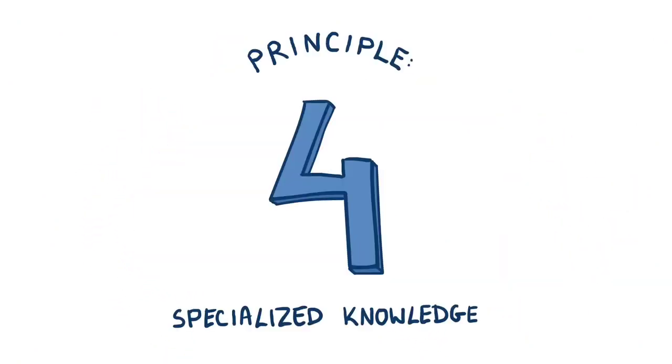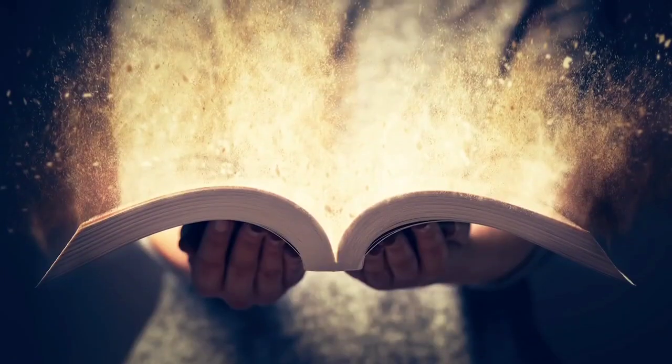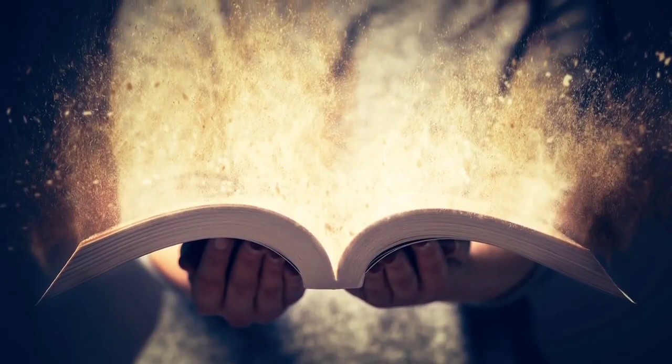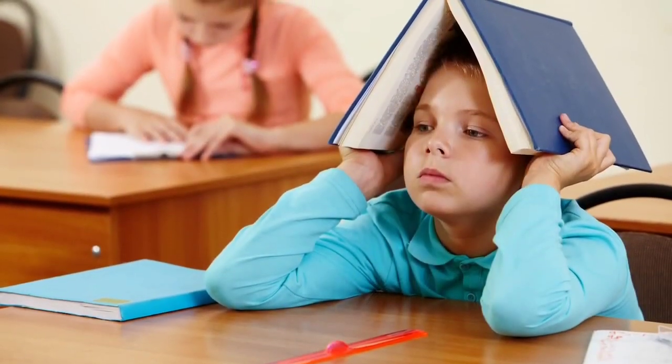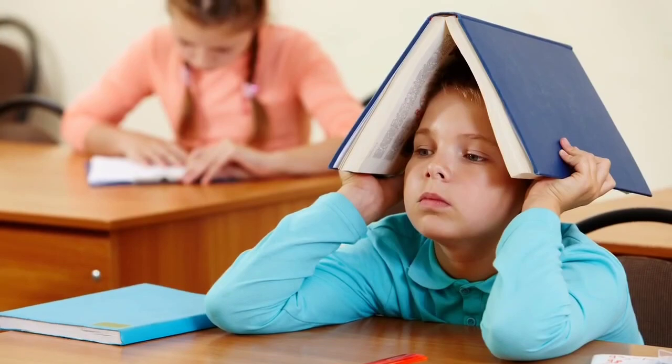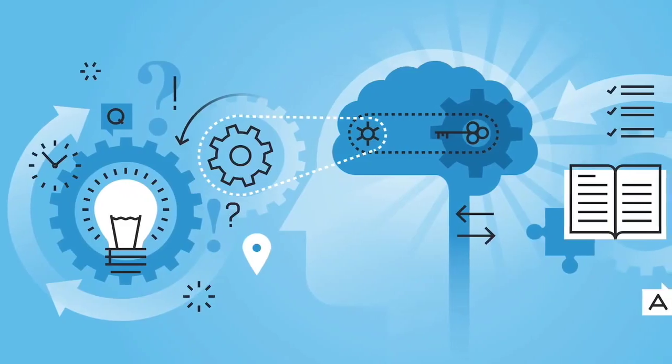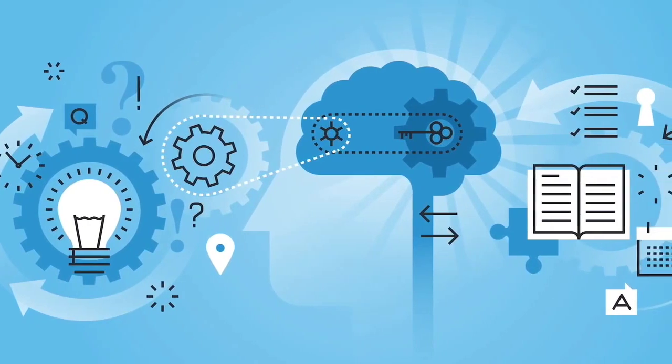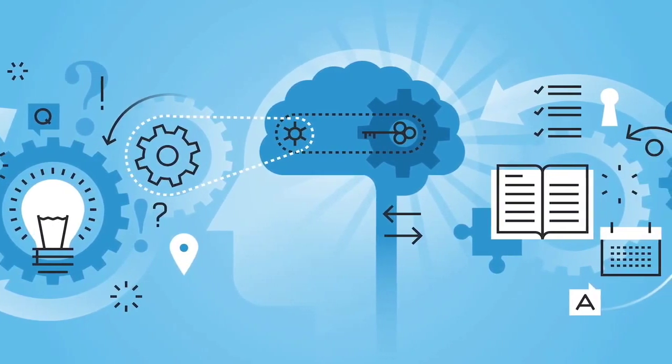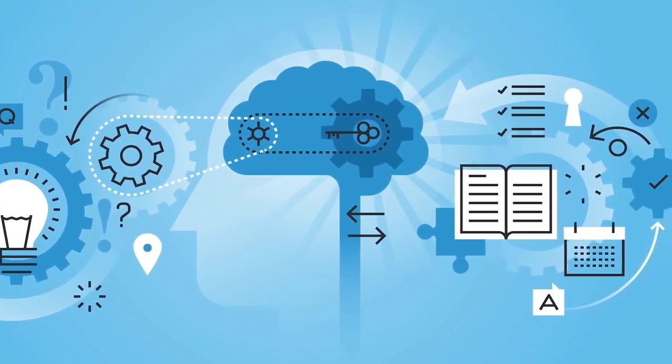Principle four is specialized knowledge. There are two kinds of knowledge: general and specialized. General knowledge is the kind of stuff you learn in school, random bits of history and math and literature that by itself isn't really good for much. Specialized knowledge, on the other hand, is knowledge that is organized and intelligently directed towards the fulfillment of your dreams.